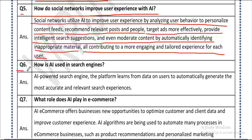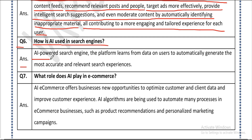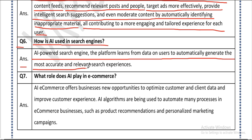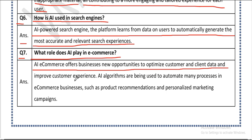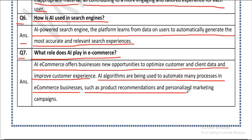Question six: how is AI used in search engines? Answer: AI powers search engines — the platform learns from data on users to automatically generate the most accurate and relevant search experience. Question seven: what role does AI play in e-commerce? Answer: AI in e-commerce offers businesses new opportunities to optimize customer and client data and improve customer experience. AI algorithms are used to automate many processes such as product recommendations and personalized marketing campaigns.